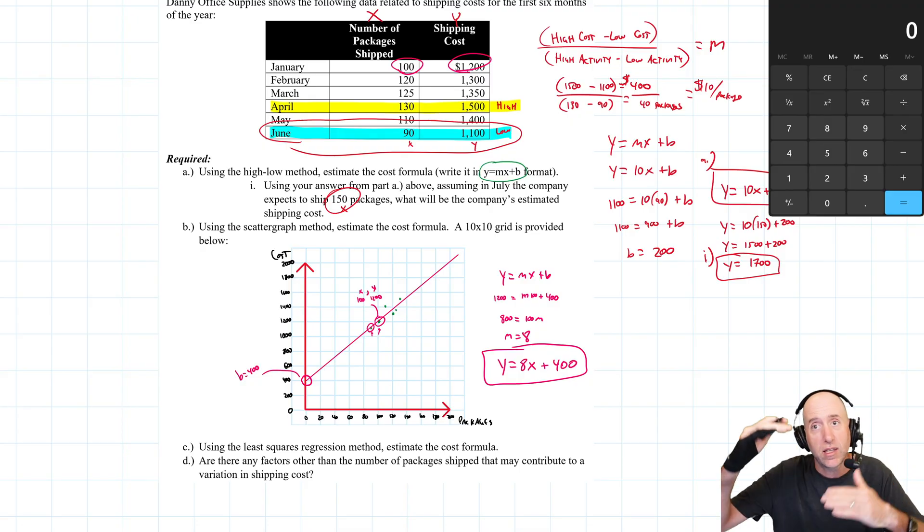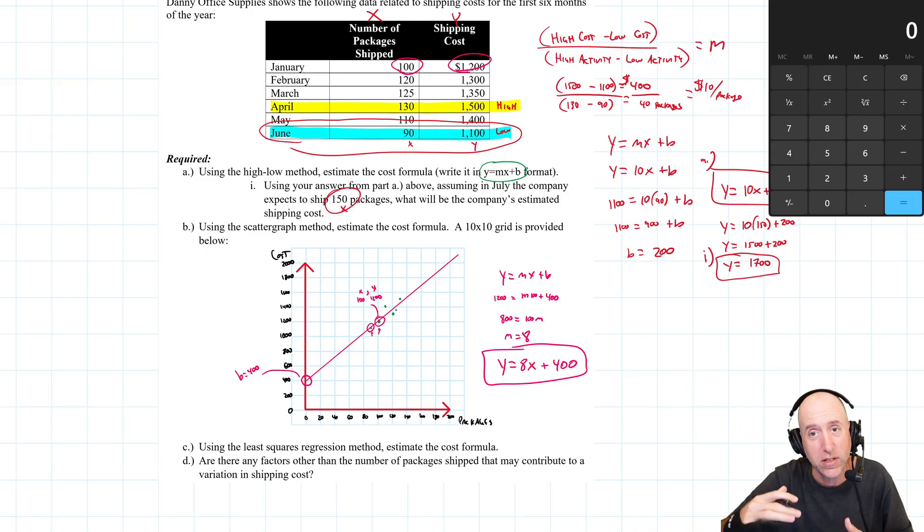The advantage of visual inspection of a scatter graph method is it uses all the data. High-low, you just take the two extremes, the highest and lowest. Scatter graph, you kind of use everything to shape your line. The disadvantage of the scatter graph method is it uses human judgment. Your eyeballs might see something different here than my eyeballs see. So in part c, we'll do the least squares regression, which is sort of the best of all worlds solution. So stay tuned for part c. Thanks for watching. Bye bye.